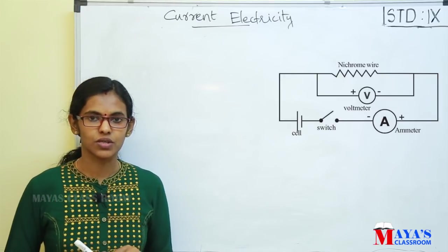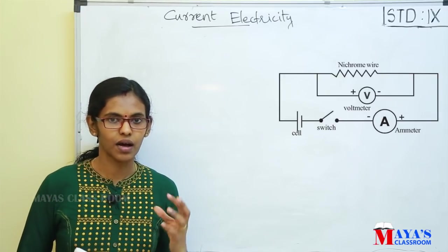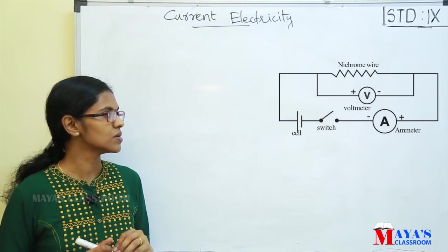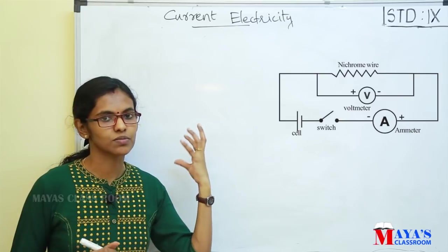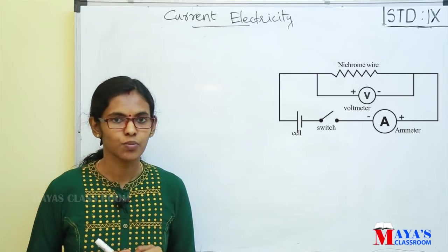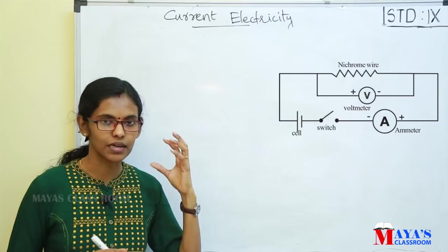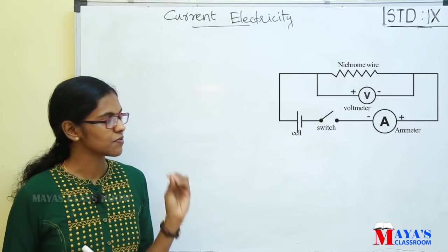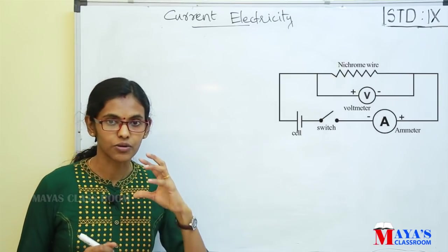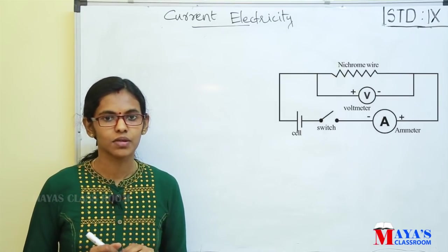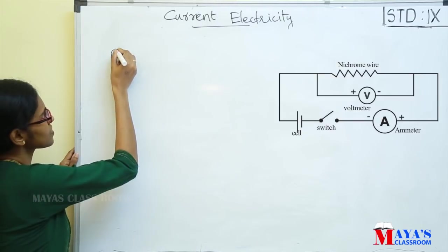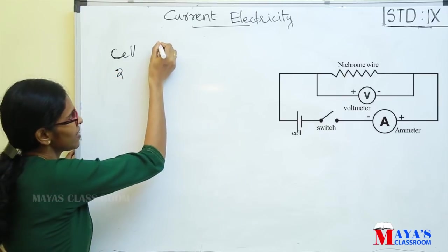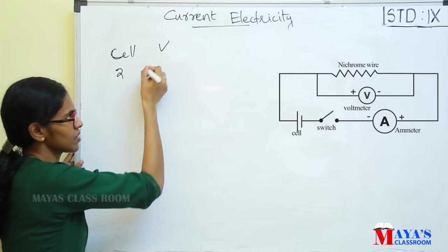Now let's switch on this circuit. As the current flows, we are going to read the voltmeter — the voltage across the cell. Suppose we have a cell of 2 volts. If there is a potential difference, it will be 2 volts.